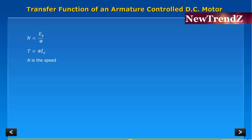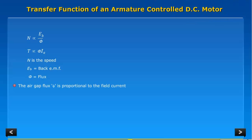N is the speed, Eb is equal to back emf, phi is equal to flux. The air gap flux phi is proportional to the field current.